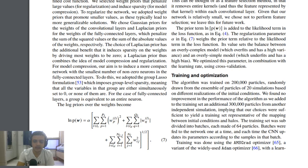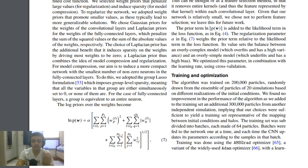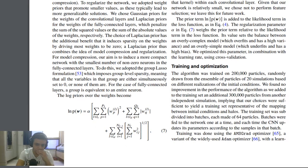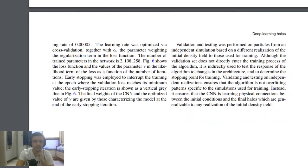The training set was divided into batches of 64 particles, and batches were fed to the network one at a time. Each time the CNN updates its parameters according to the batches — it's all about fine-tuning the model.